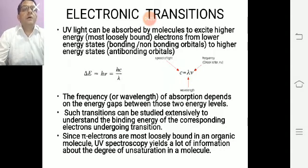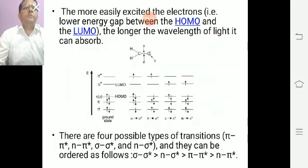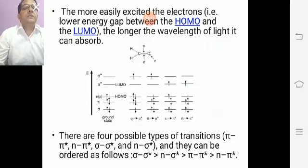Since pi electrons are most loosely bound in an organic molecule, UV spectroscopy yields a lot of information about the degree of unsaturation in a molecule. The more easily excited the electron — that is, the lower the energy gap between the HOMO (highest occupied molecular orbital) and the LUMO (lowest unoccupied molecular orbital) — the longer the wavelength of light it can absorb.